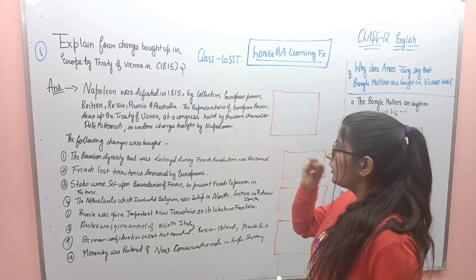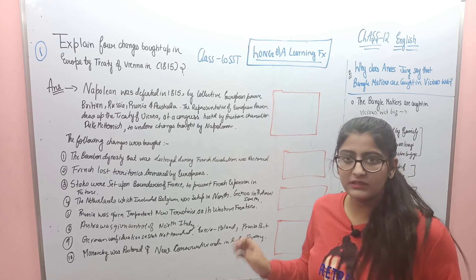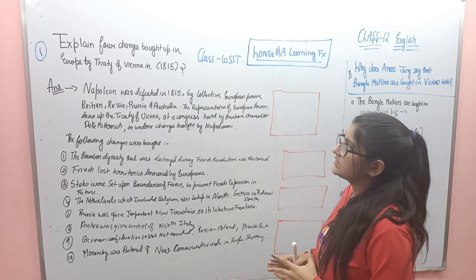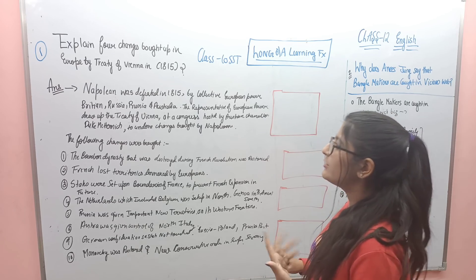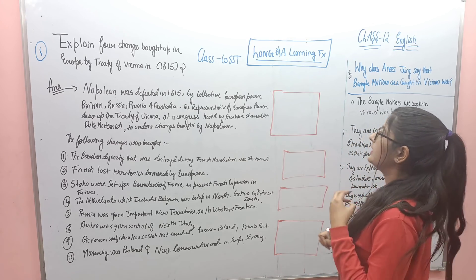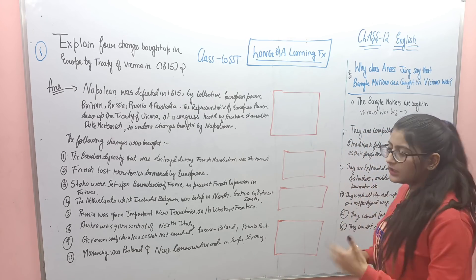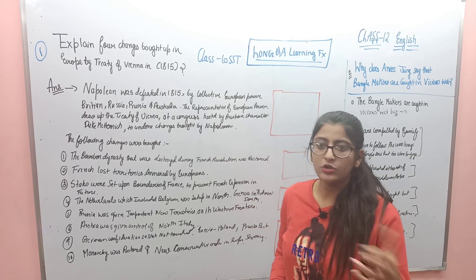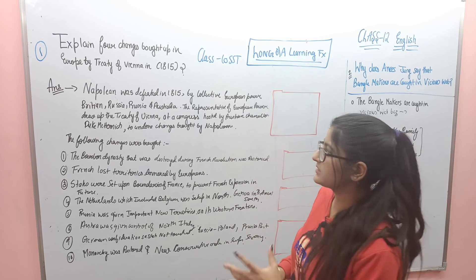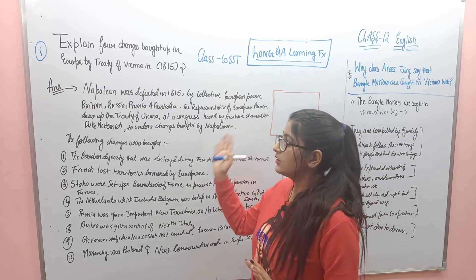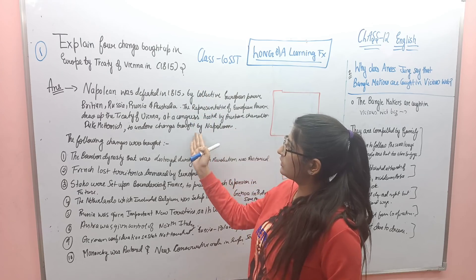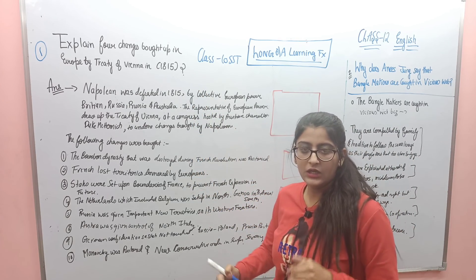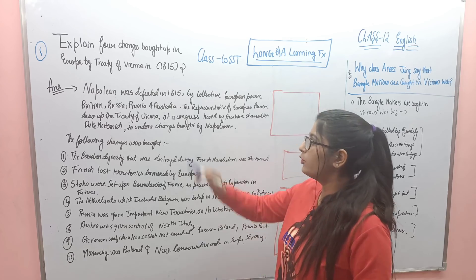The question is: 'Explain 4 changes brought up in Europe by the Treaty of Vienna in 1815.' When your question comes, the statement is very important. We have told you what happened in this Treaty of Vienna and why Napoleon was defeated in 1815 by collective European power.